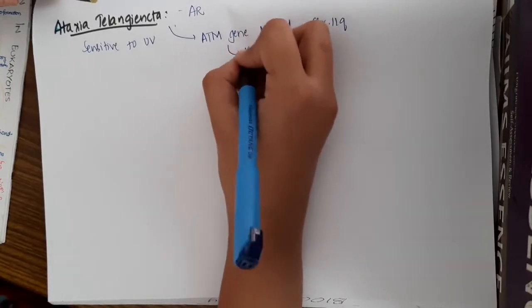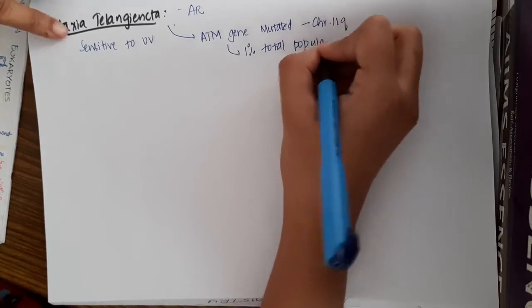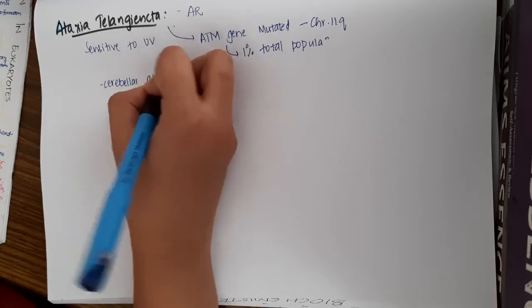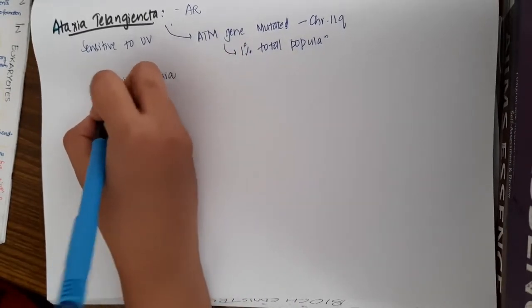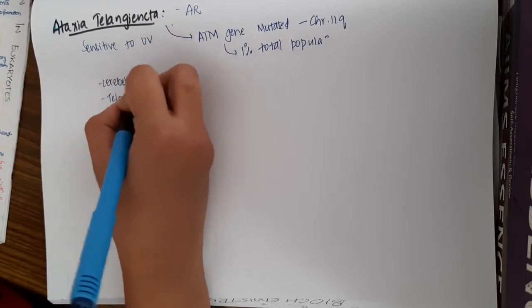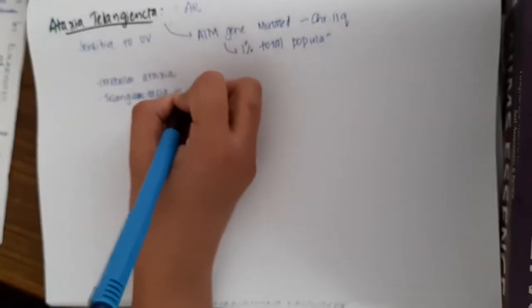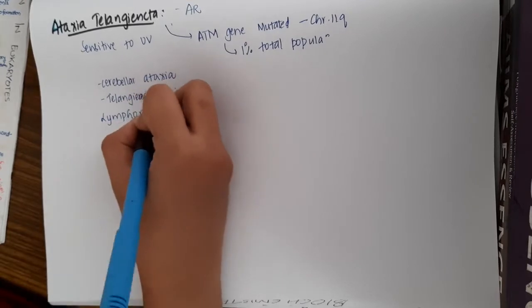These patients develop symptoms like cerebellar ataxia, that is imbalance in the body due to cerebellar issues. There is telangiectasia seen in the eyes. They also develop lymphoreticular neoplasms, which are common in patients with ataxia telangiectasia.